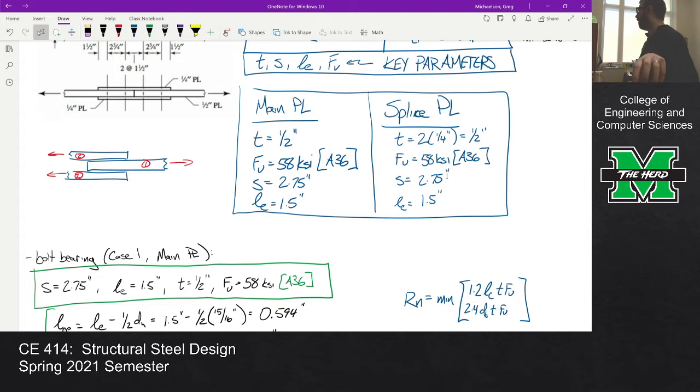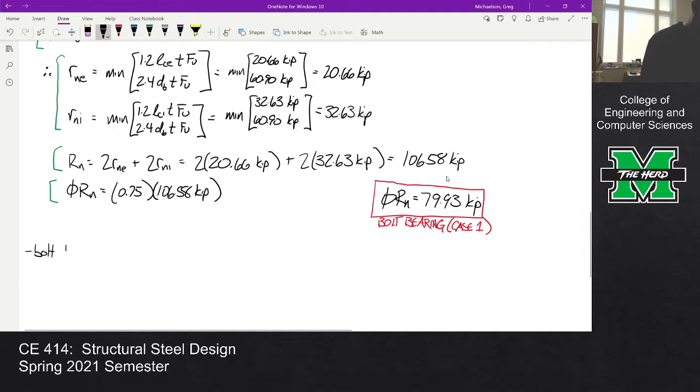When we went through and identified the parameters for the main plate and the splice plate, we got the same values. They both had the same thickness, same material grade, same bolt spacing, same edge distance. So bolt bearing for case two, for the splice plates, phi*rn is 79.93 kips.